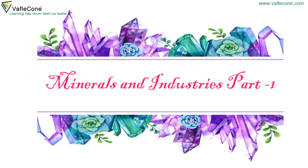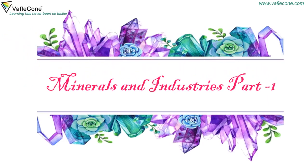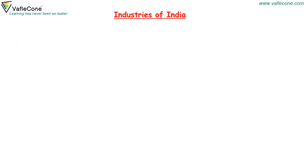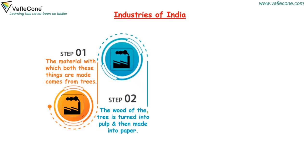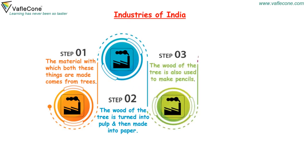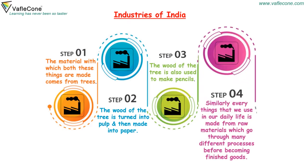Minerals and Industries — Industries of India. The material with which both these things are made comes from trees. The wood of the tree is turned into pulp and then made into paper. The wood of the tree is also used to make pencils.